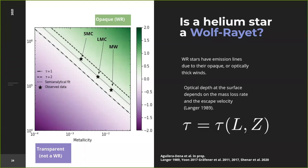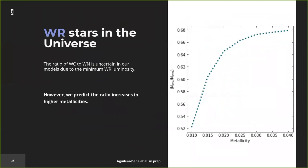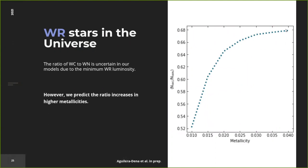Using this information, we were able to take our helium star models and predict that the ratio of WC stars per WN-type star will increase as metallicity increases, steeply rising around solar metallicity, and then reaching some equilibrium value at very high metallicity environments such as the deep Milky Way or more evolved galaxies.